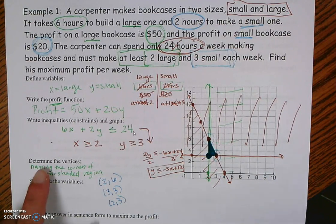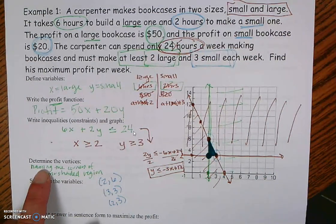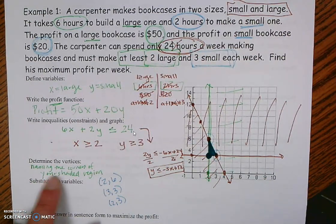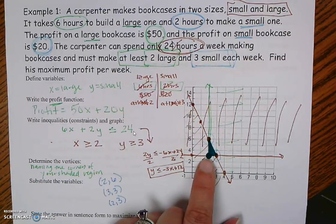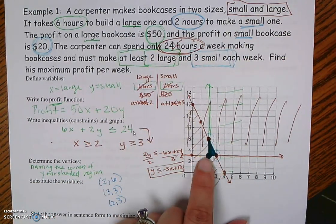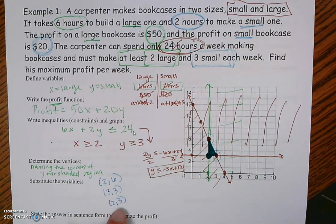After graphing, I was careful with my shading. If you're having issues with shading, use your intercepts. If my intercept is at 12 and it says y is less than, I shade where the y values are smaller. If my y value line is at 3, I shade where y values are bigger than 3 — so above. If my x value is at 2, I shade where x values are bigger. I always compare my numbers to my intercept and shade accordingly. Vertices are the corners of the shaded region: (2, 6), (3, 3), and (2, 3).